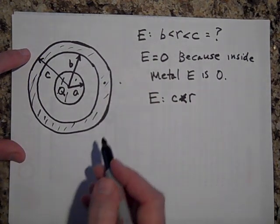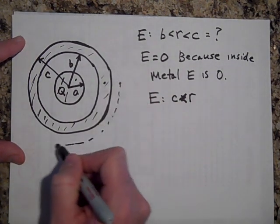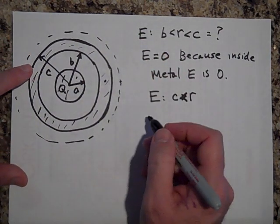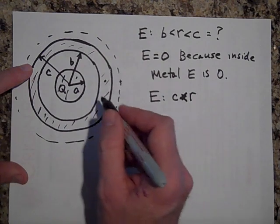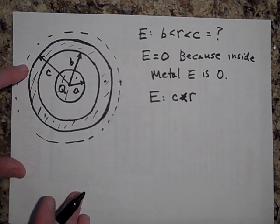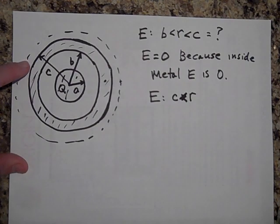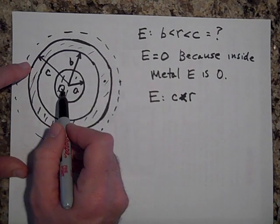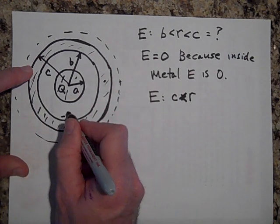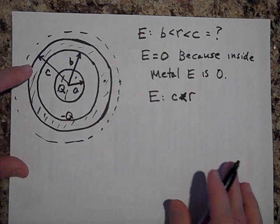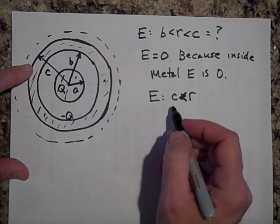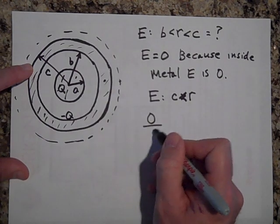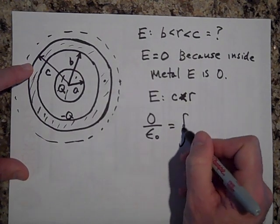And so, if you draw and if you put in a Gaussian surface out there, the charge enclosed, let's see what it is. The total charge enclosed is going to be, let's see, we have Q here and negative Q here. And so, that's going to be, the total charge enclosed is zero over epsilon naught is equal to the net flux.